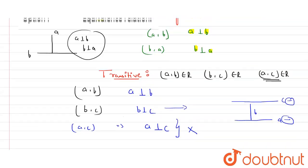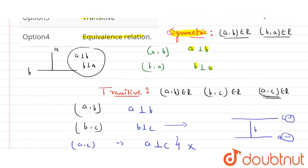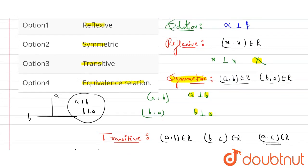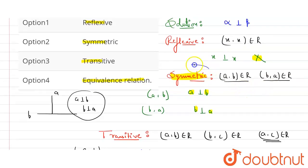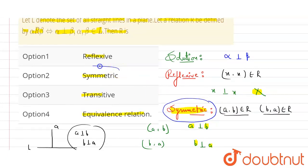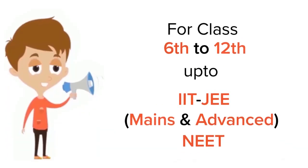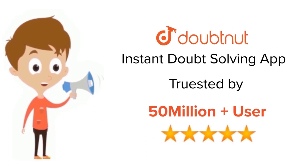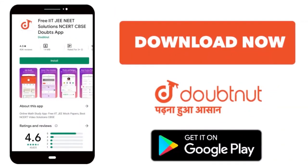So according to this question, R is only symmetric. Option two is the right answer. For class 6 to 12, IIT JEE and NEET level, trusted by more than 5 crore students — download the Doubtnut app today.